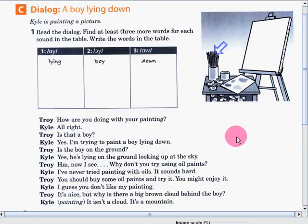Today, we're going to talk about a dialogue, A Boy Lying Down. This is about Kyle who is painting a picture. Read the dialogue, find at least three more words for each sound in the table, then write the words in the table. Like here, we have the following sounds: I, OI, and OW. Example of words: for I, Lying. OI, Boy. OW, Down.